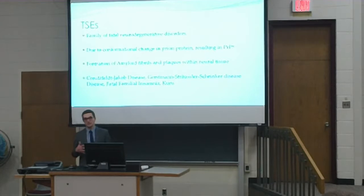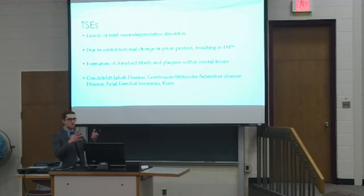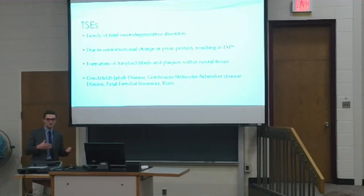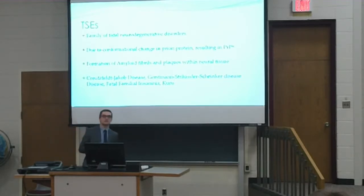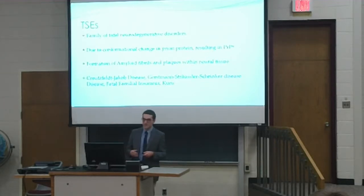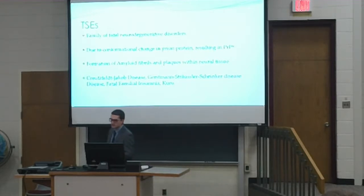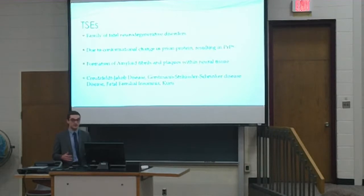TSEs are a family of fatal neurodegenerative disorders caused by a conformational change in the prion protein from its physiologic form to what's called the PRPSC isoform — prion protein scrapie — named after scrapie, a chronic wasting disease in sheep where these diseases were first discovered. They are characterized by formation of amyloid fibrils and plaques within neural tissue, a feature shared with Alzheimer's disease. The four recognized human TSEs are Creutzfeldt-Jakob disease, Gerstmann-Sträussler-Scheinker disease, fatal familial insomnia, and Kuru.